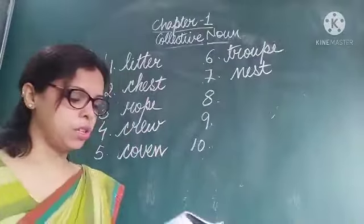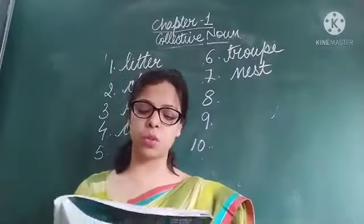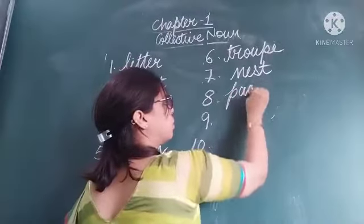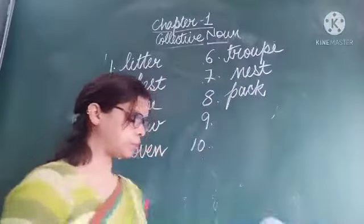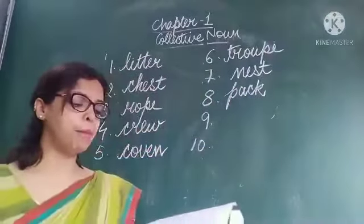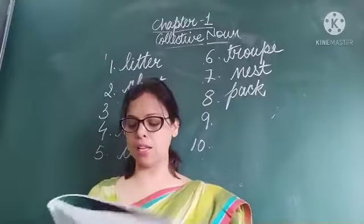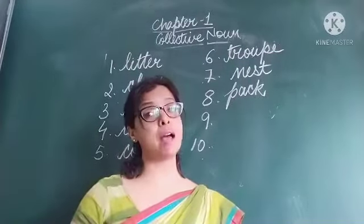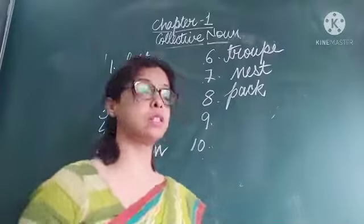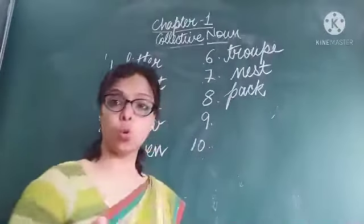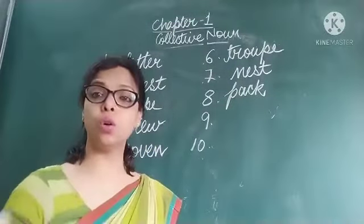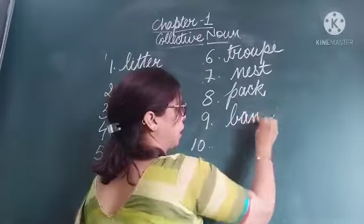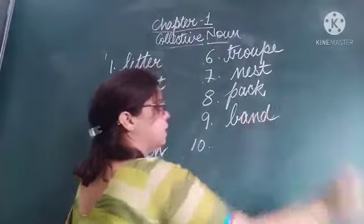Eighth: the magician showed us many tricks with a pack of cards. Ninth: we saw a herd of elephants crossing the river — many elephants together known as a herd. Tenth: the band of robbers was hiding in the forest.